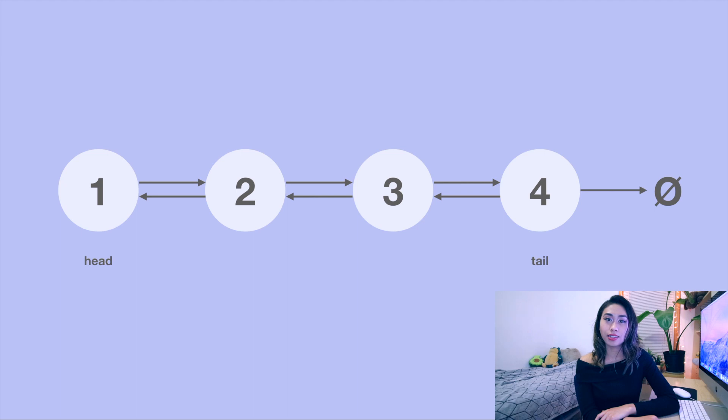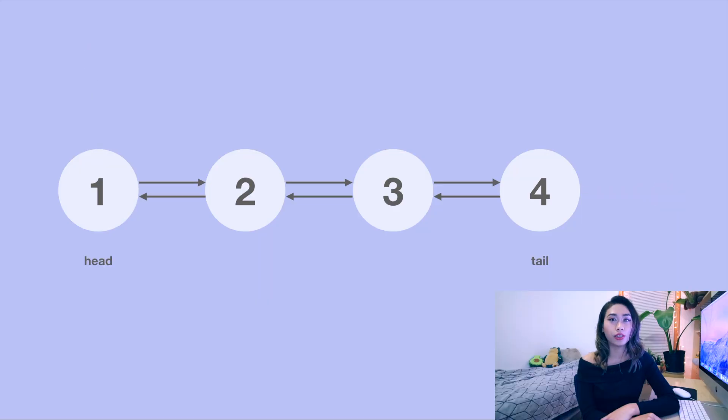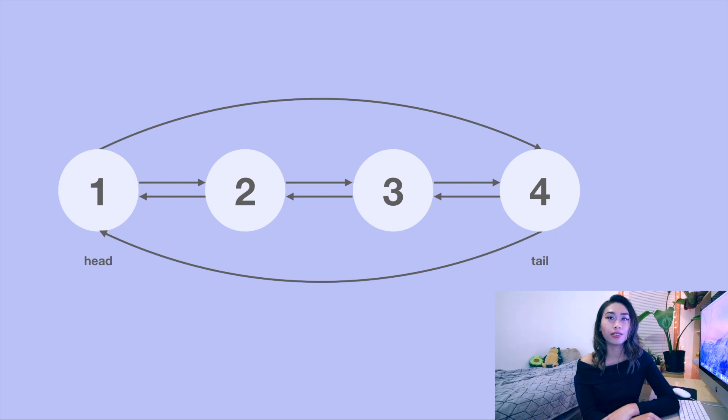Additionally, just as the tail node has a next pointer to null, in the doubly linked list, the head node also has a previous pointer to null. One real-world application of the linked list might be a music player, where each song is a node in the linked list that has a reference to the next and the previous song. In fact, the music playlist might actually be a special type of linked list called a circular linked list, where the head and tail nodes actually point to each other rather than to null.